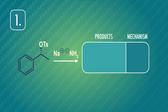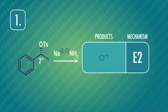Here's problem number one! We're using NH2- as our nucleophile, which is a strong base. OTS is tosylate, one of those sulfonates and a good leaving group. The alpha carbon is a secondary carbon, which is slightly less substituted and could do either E1 or E2. Because of the strong base, though, we'd expect this to be an E2 reaction, and there's only one place the double bond can go to form a product.